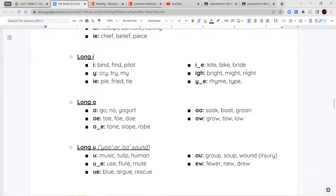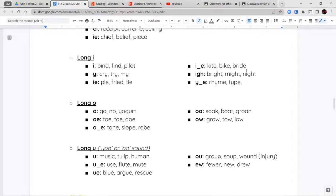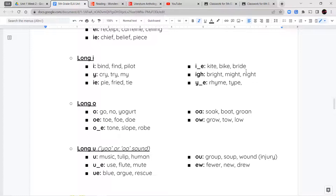For long I, we can make I with just an I like bind, find, or pilot. We can make it with a Y like cry, try, or my. I-E like pie, fried, or tie. I consonant letter E like kite, bike, or bride. I-G-H like bright, might, or night. Or Y consonant letter E like rhyme or type.